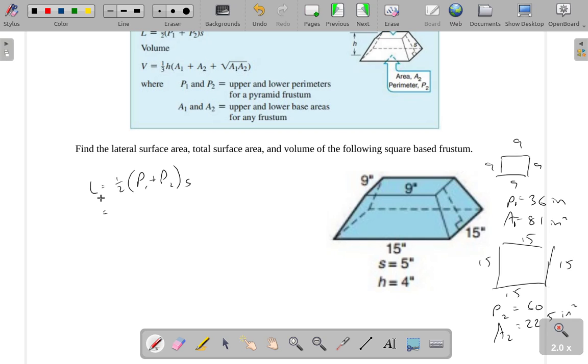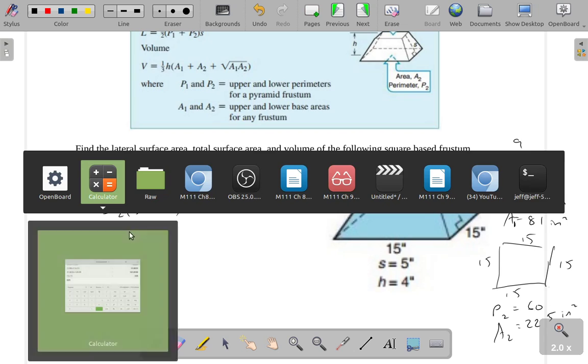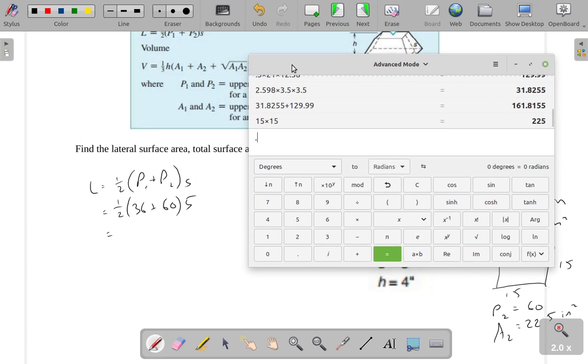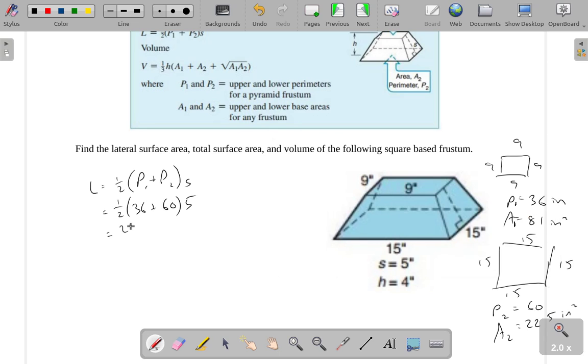I'm just going to plug stuff into the formulas here. The lateral surface area is 1/2 times the sum of my two perimeters. That's 36 plus 60 times my slant height. And it looks like the slant height is given right here as 5 inches. So it's just a matter of plugging stuff into the calculator. 0.5 times parentheses 36 plus 60, close my parentheses, times 5, we get 240. And this would be, since this is a lateral surface area, this would be in square inches.